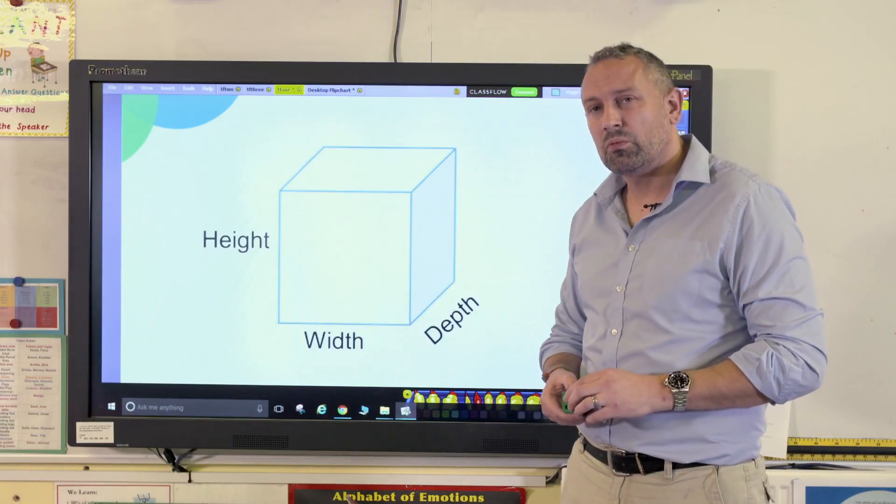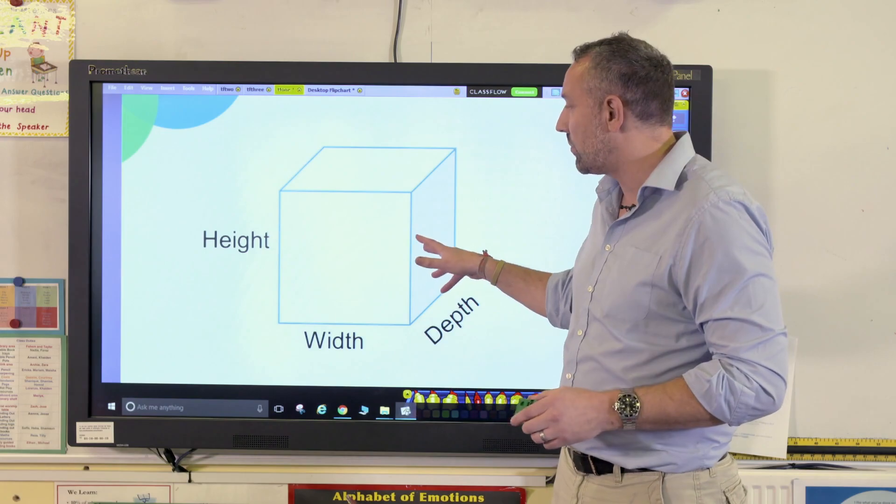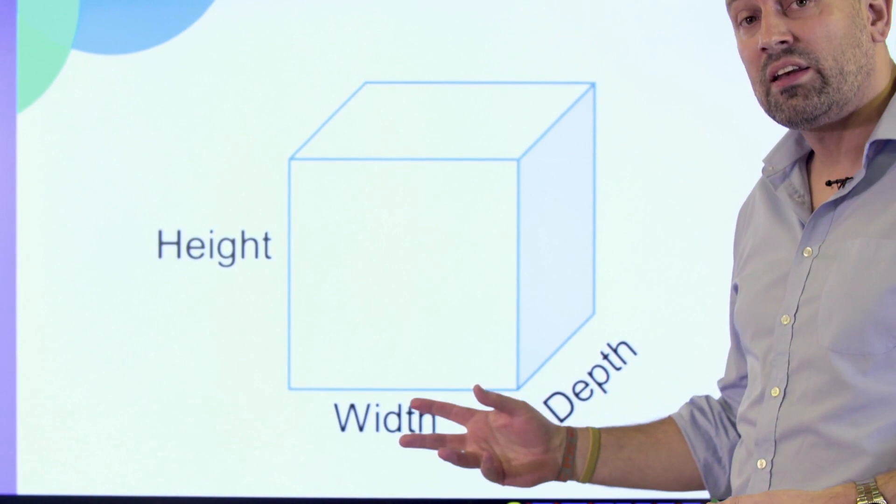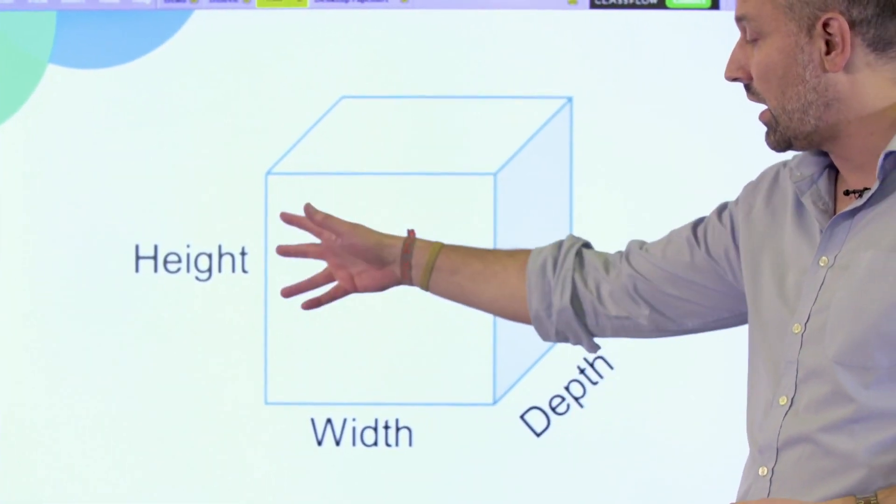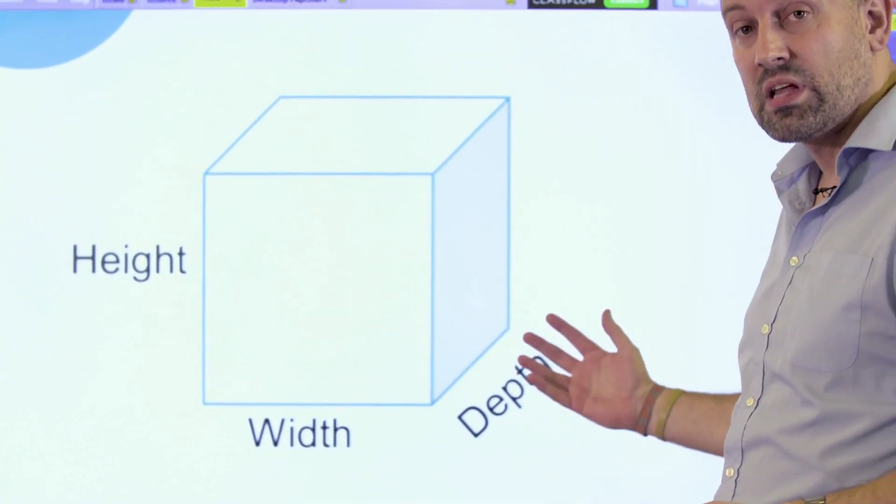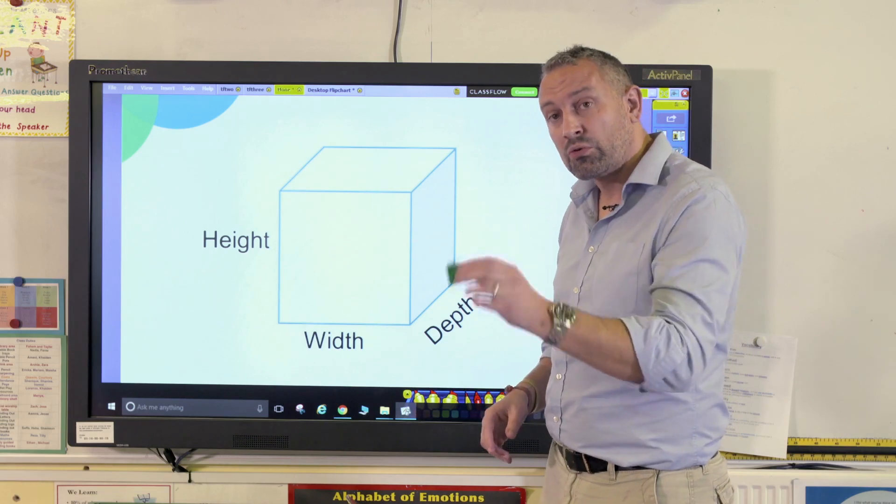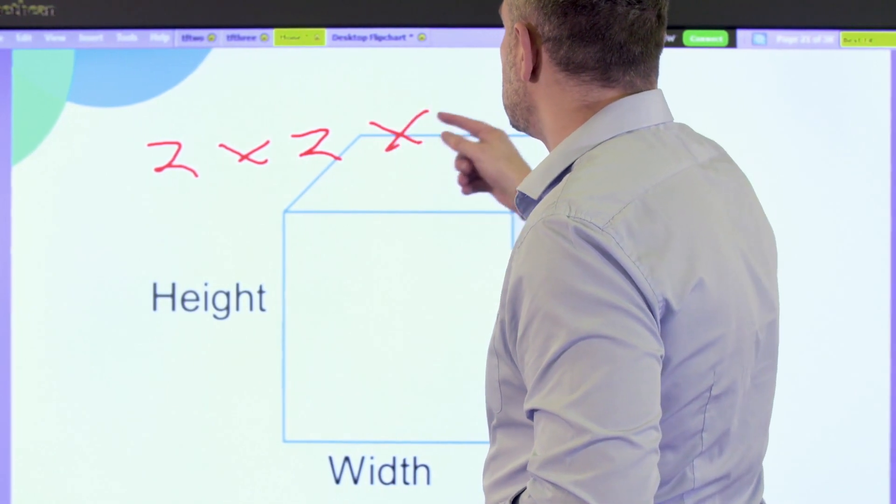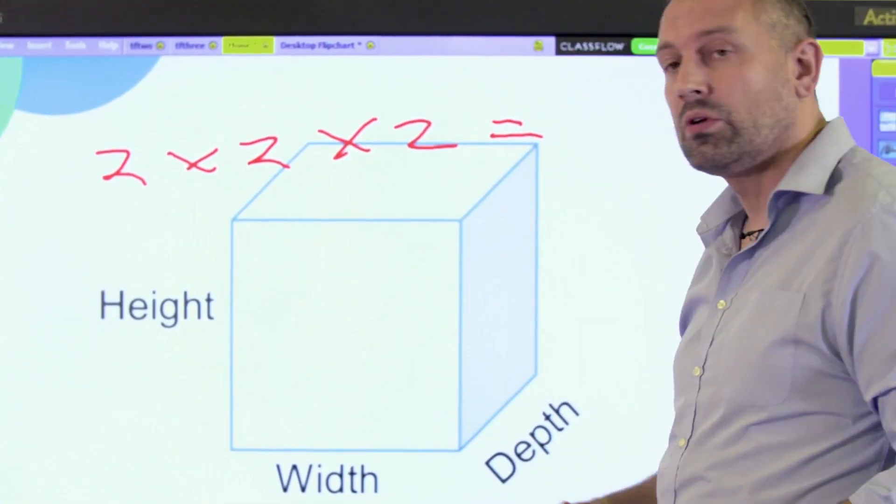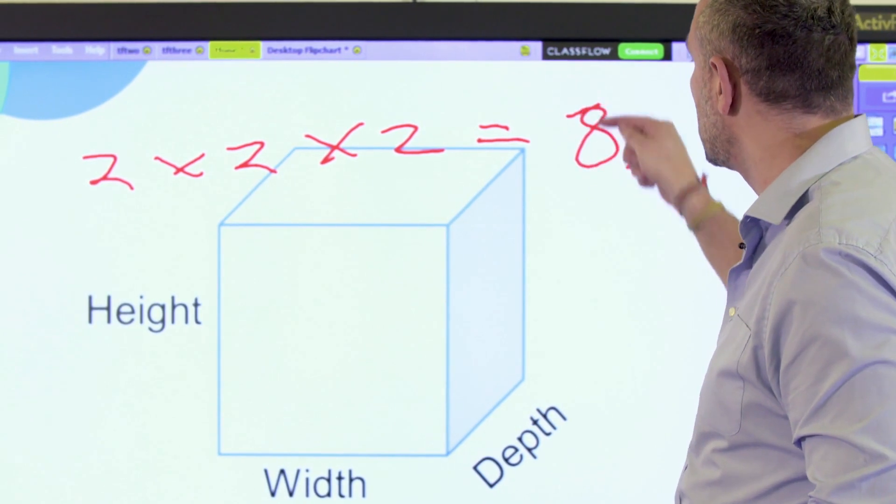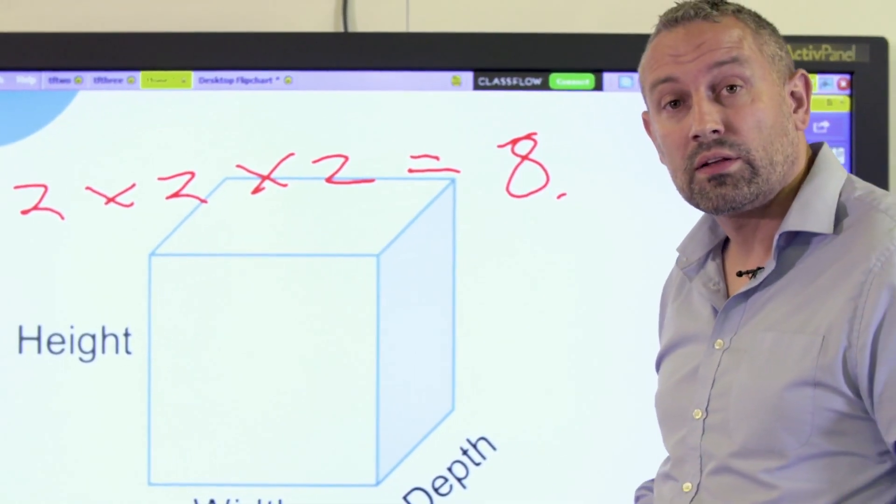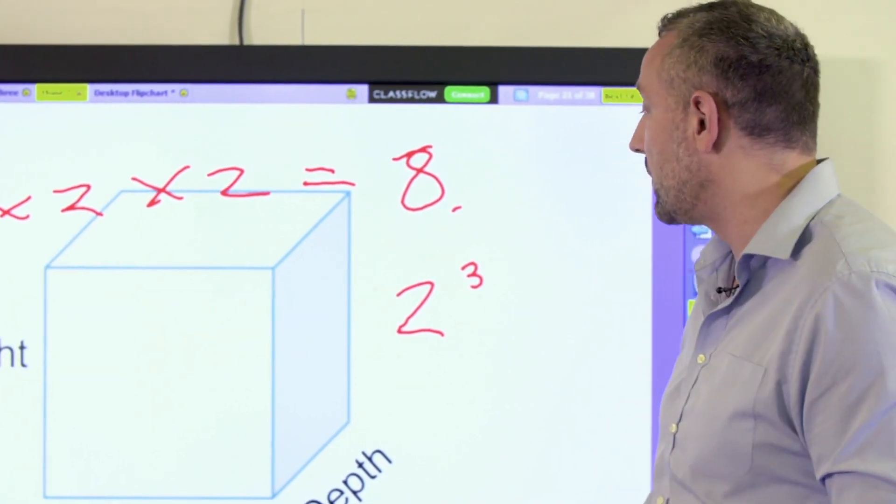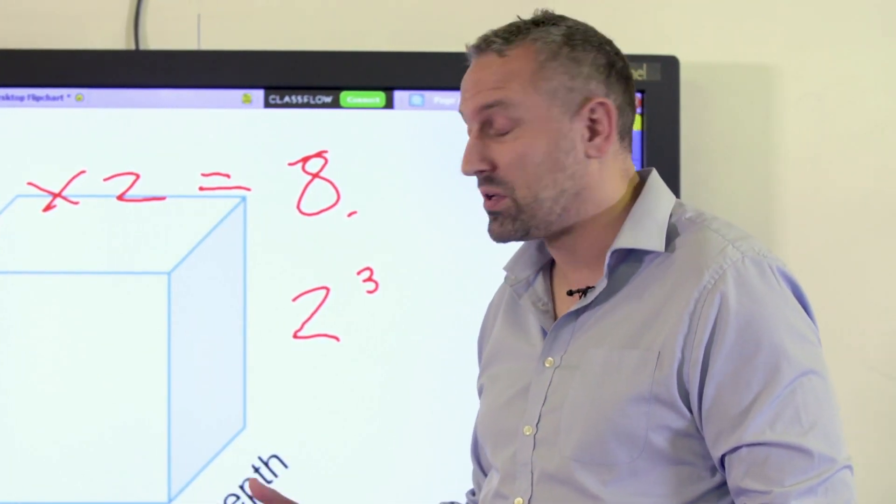Now here we've got a cube which might be a little bit abstract when we look at it pictorially, but if they've played with it concrete first that will really help them. And again, we're now dealing with three dimensions: height times width times depth. We would write it like this: 2 times 2 times 2 equals 8. We could also write that like this: 2 with a small 3, which is 2 times 2 times 2.